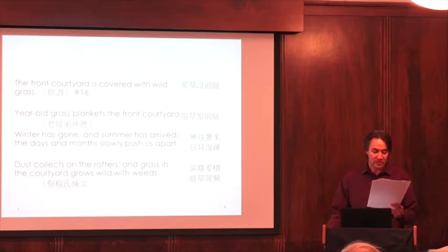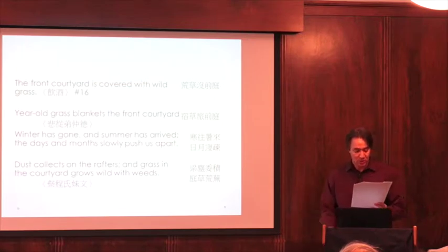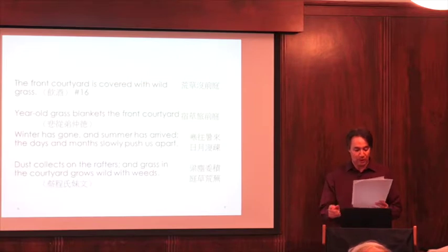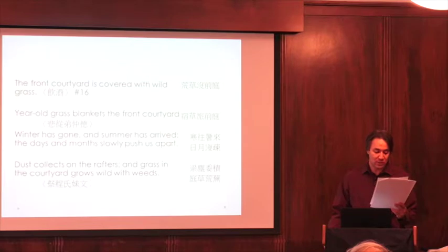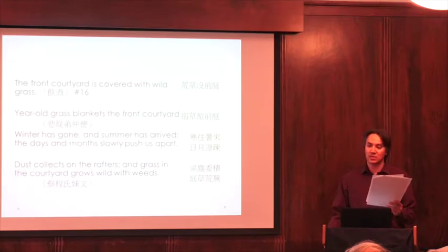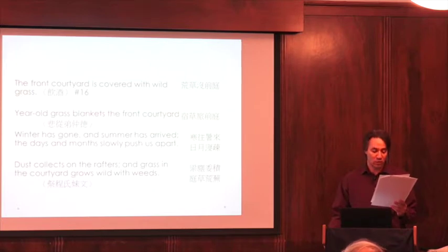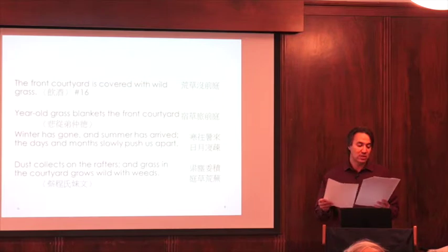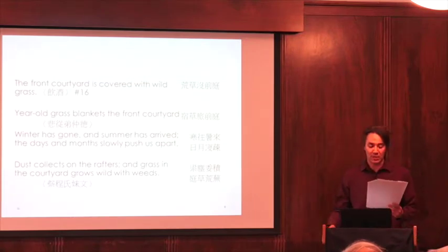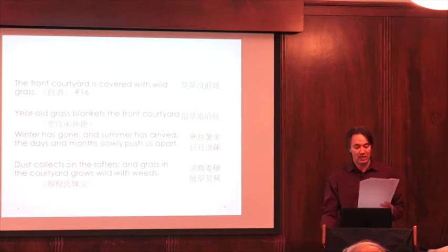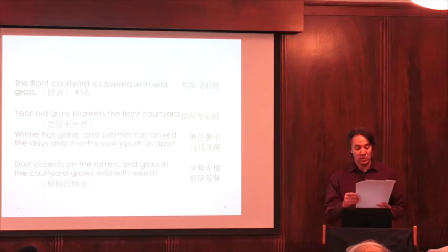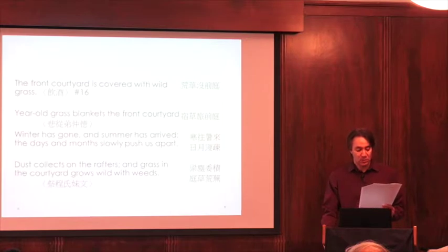As we saw in Returning to Live on the Farmstead, where untamed grass threatened Tao's bean crops, plant life in this poem threatens Tao's homestead. This is not an uncommon theme in Tao's work. These kinds of descriptions are found in at least half a dozen poems. In the very next poem Tao writes in the Drinking Wine series, for instance, Tao likewise states that his front courtyard is covered with wild grass. The image of wild plants growing in what were once domesticated spaces occurs especially often in poems related to death. In one poem lamenting the death of his cousin, Tao describes how year-old grass blankets the front courtyard. In a poetic essay lamenting the death of his sister, Tao states: Winter has gone and summer has arrived. The days and months slowly push us apart. Dust collects on the rafters and grass in the courtyard grows wild with weeds.